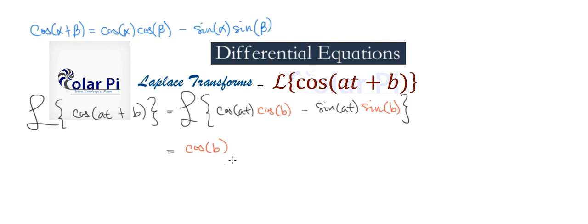Because the Laplace transform is a linear operator, we can take out the constant in the first part and do Laplace transform of just cosine at, and then do minus, take out the constant from the second part, and do the Laplace transform of sine of at. I've used both properties of the linear operator: taking out a constant and splitting it over a sum or difference.